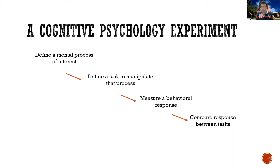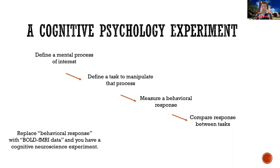I didn't elaborate much on what the experiment would be, but this would be one way of thinking about how to create a cognitive psychology experiment. Now, if you just replace the behavioral response — be it response time or some accuracy measure — with BOLD fMRI data, then you have yourself a cognitive neuroscience experiment.